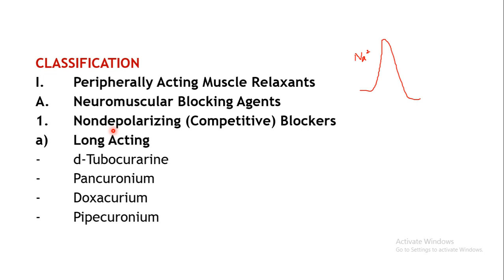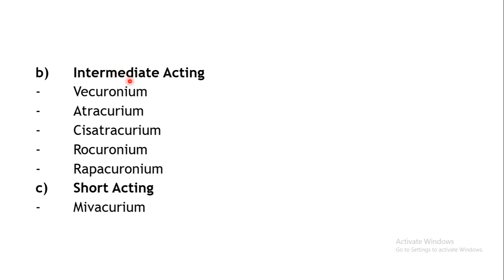Non-depolarizing blockers or competitive blockers: the antagonist directly blocks the receptors with no depolarization produced. These are further divided by duration of action. Long-acting agents include D-tubocurarine, pancuronium, doxacurium, and pipecuronium. Intermediate-acting agents include vecuronium, atracurium, cis-atracurium, rocuronium, and rapacuronium. The short-acting agent is mivacurium. All these agents are non-depolarizing or competitive type blockers.